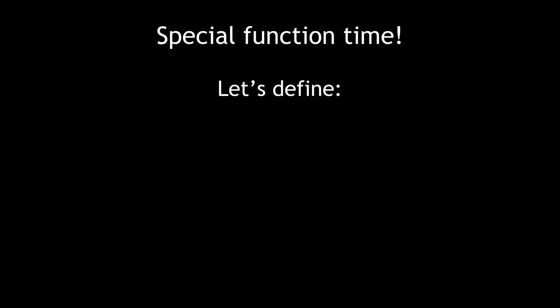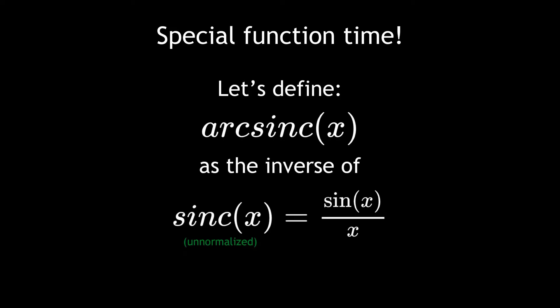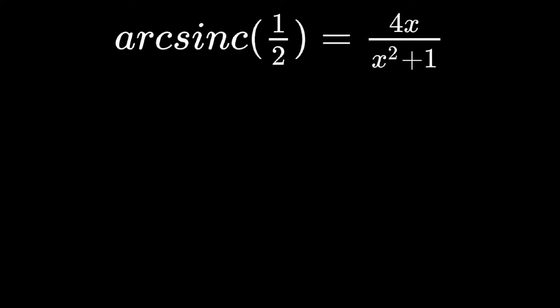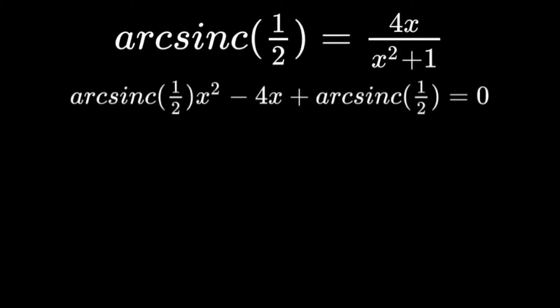Here is where we enter special function territory. The unnormalized sinc function is defined to equal sine of x over x, so arcsinc should be the inverse of sine of x over x. Taking the arcsinc of both sides gives arcsinc of 1 half equals 4x over x squared plus 1. Multiplying by x squared plus 1 and shuffling terms around gives us arcsinc of 1 half times x squared minus 4x plus arcsinc of 1 half equals 0.